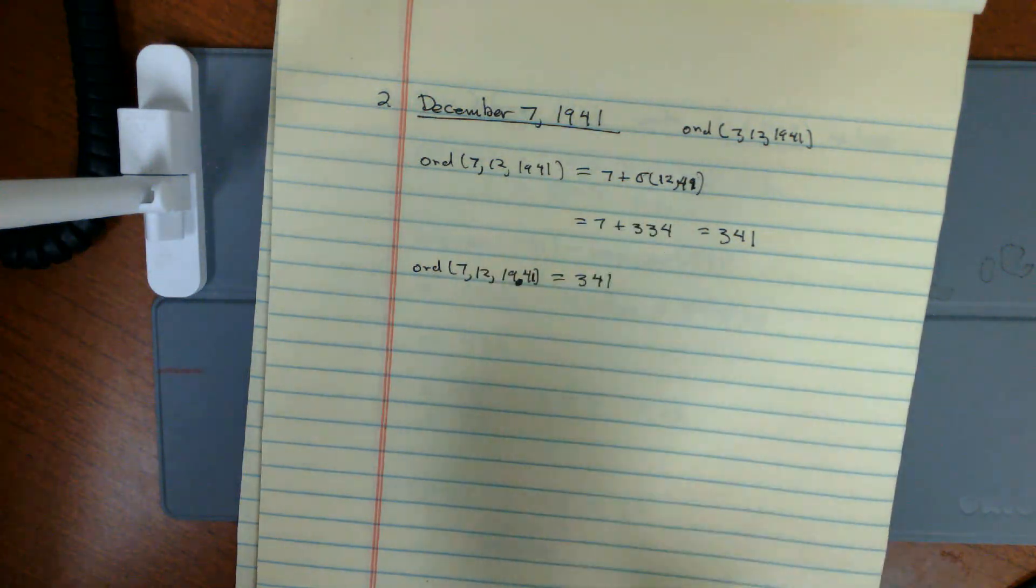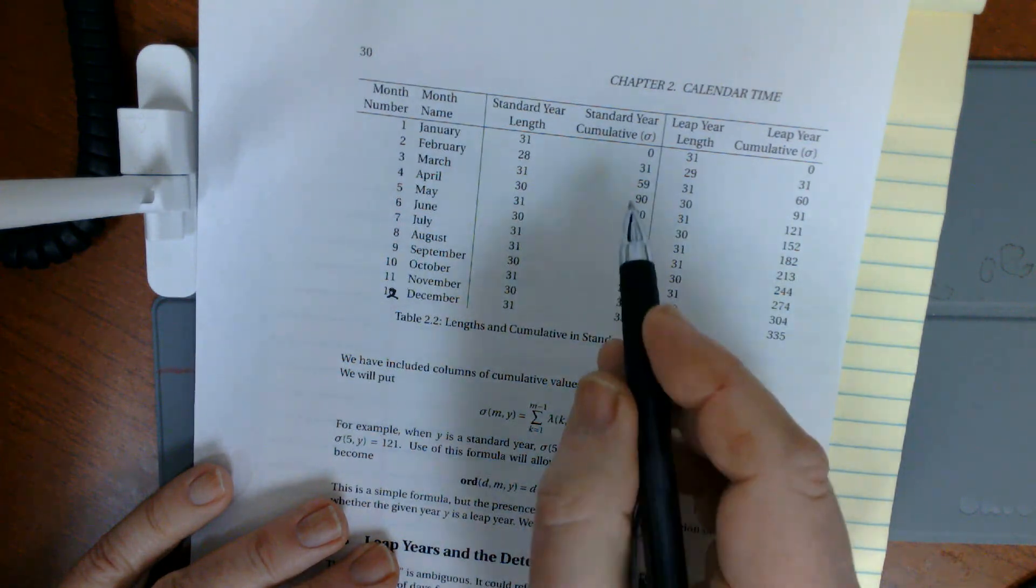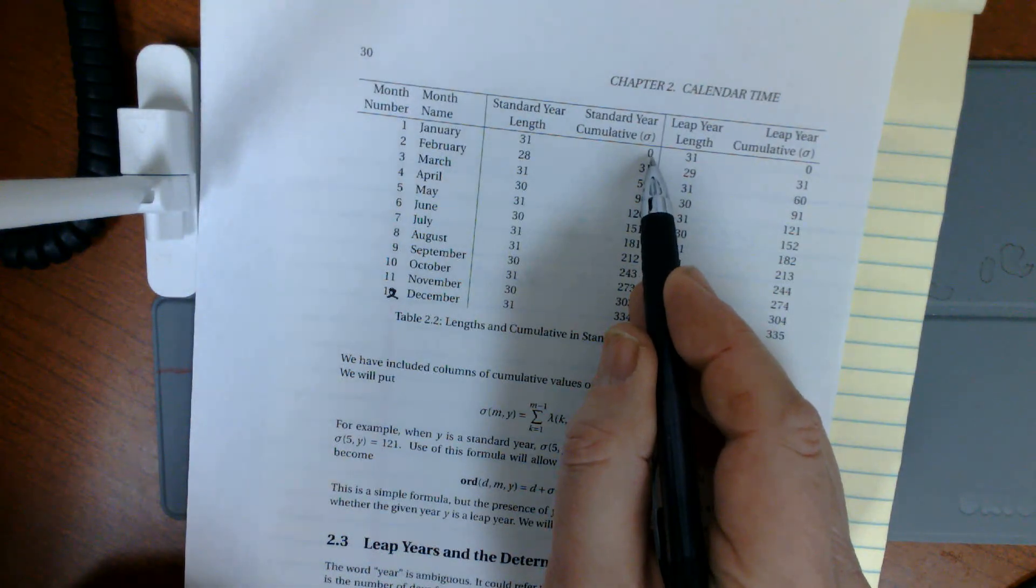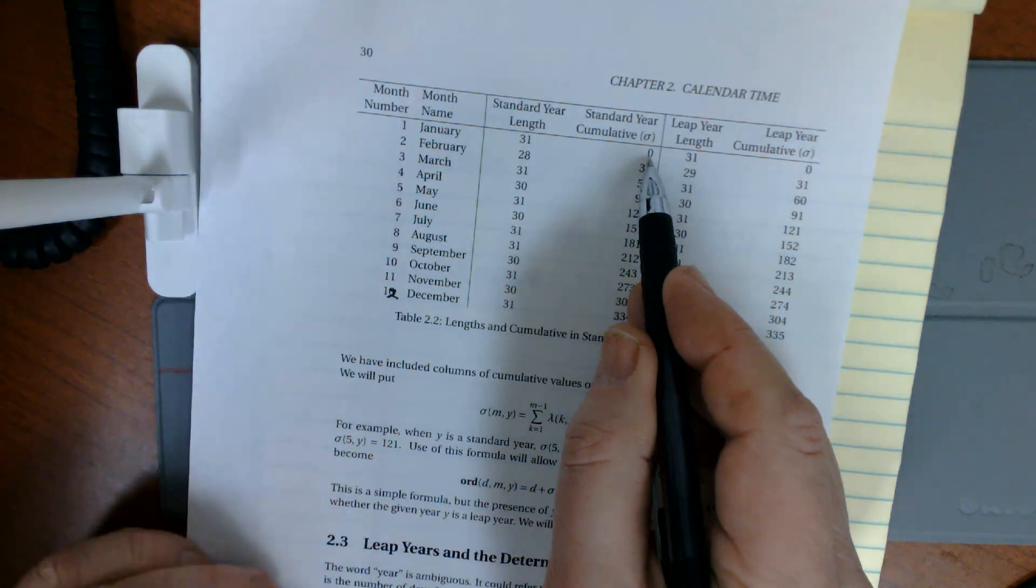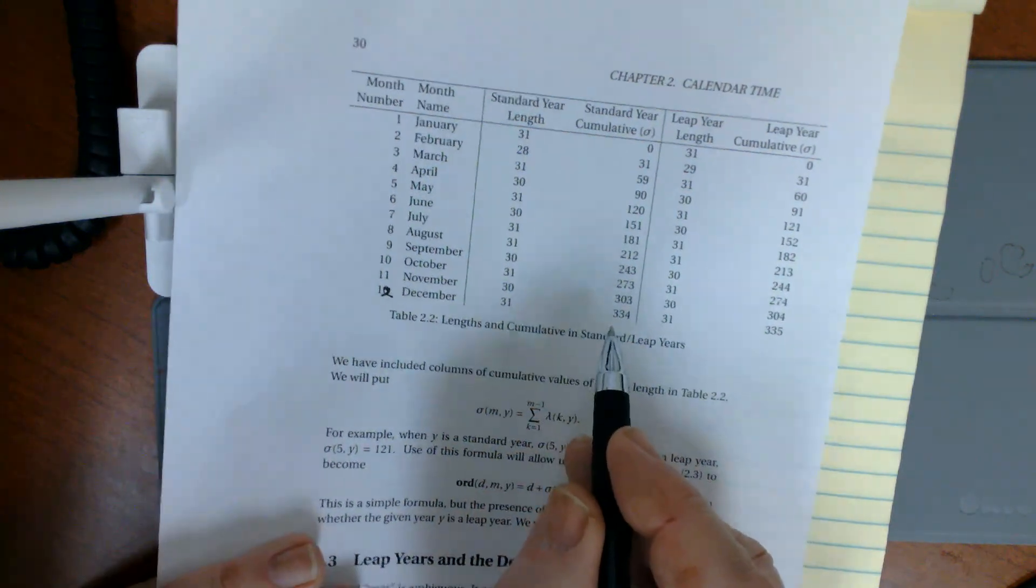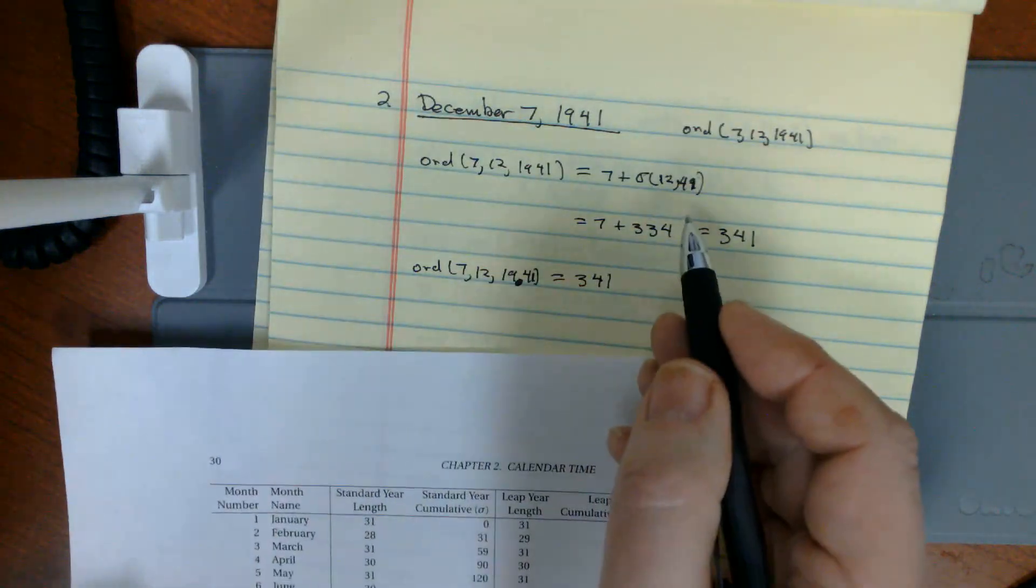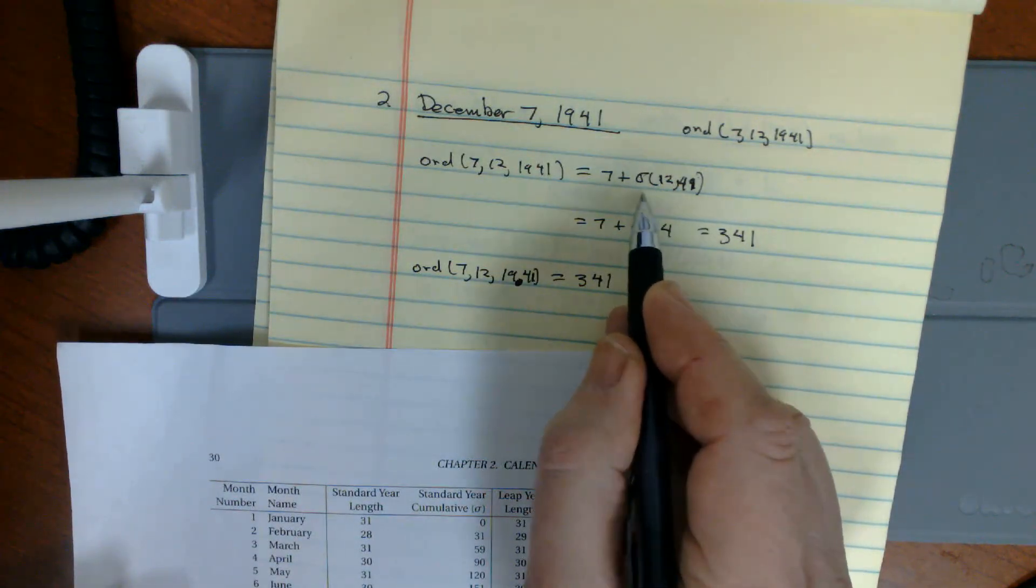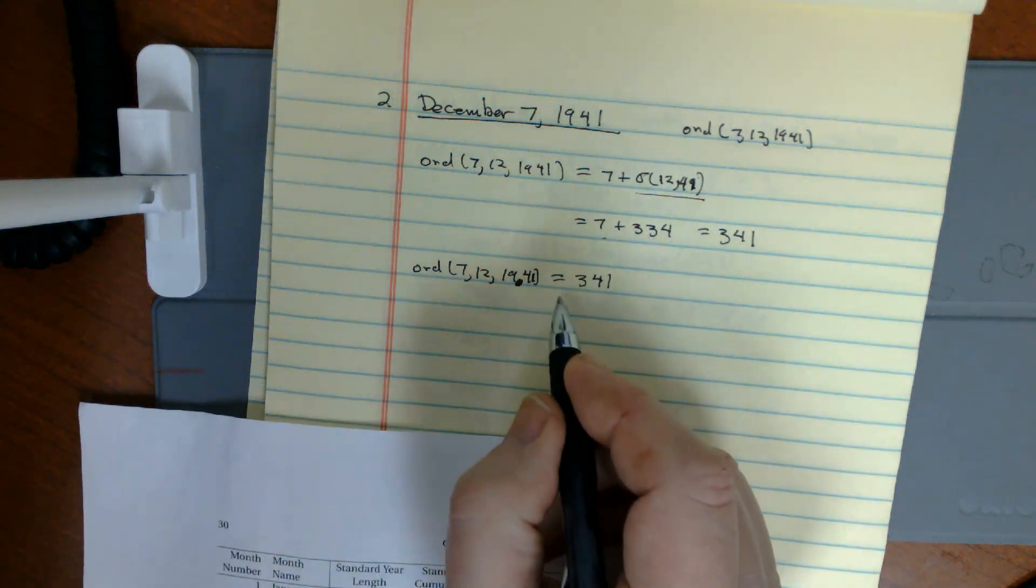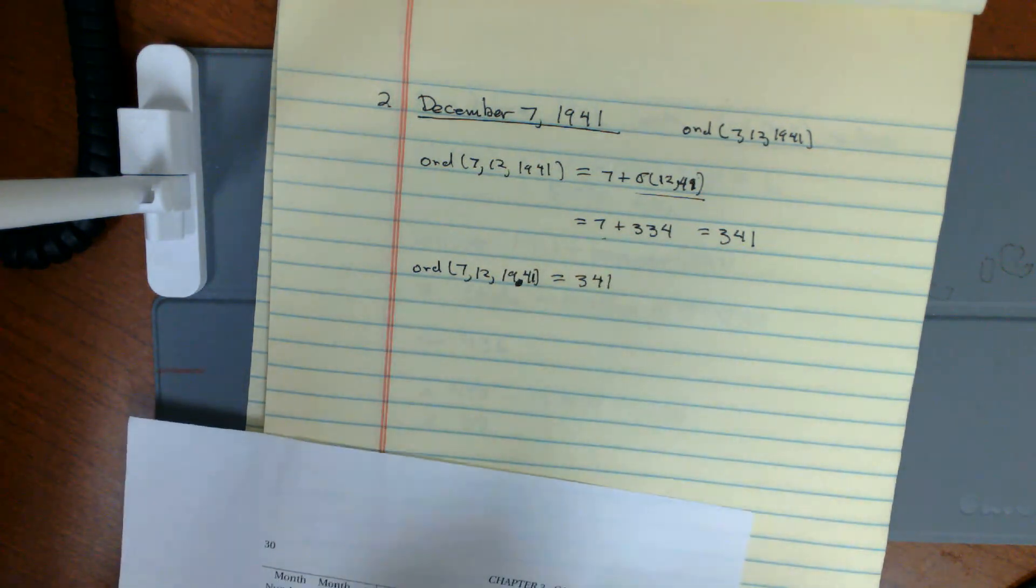Remember, you take the day of the month. It's 7th, and then you use the table which on the exam you will be given. The table, sigma, gives you the number of days in a particular year that occur before that month. January, no days occur before January, that's zero. In December, however, 334 days occur before December. That'll be 334 goes for that right there. 7 plus 334 is 341. So December 7th, 1941 is the 341st day of the year.